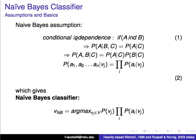Some assumptions: we assume that the probability of one event given two others is independent. If A and B are independent, then the probability of A given events B and C is basically the probability of A given C, because A is independent of B. And the probability of A and B occurring given C is the probability of A given C times the probability of B given C.